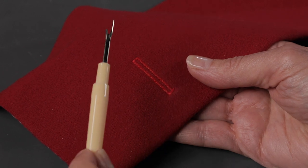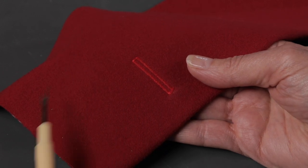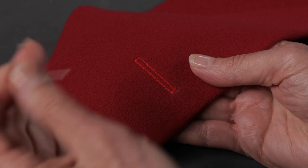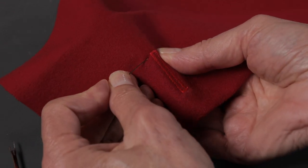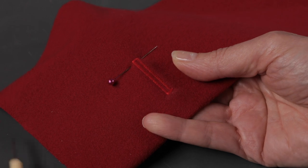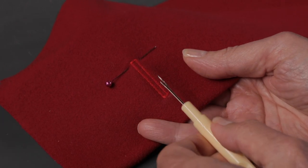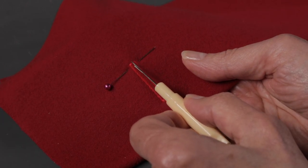You can use your seam ripper from your accessories to cut the buttonhole open, but before you do, it's a good idea to place a pin at one end. This way, as you cut the buttonhole open, you don't accidentally cut too far and cut through that end of the buttonhole.